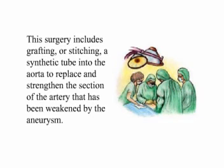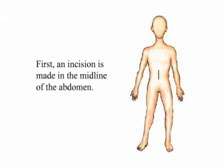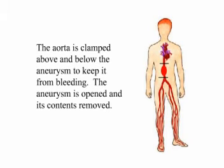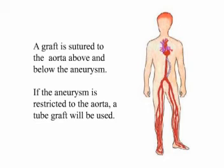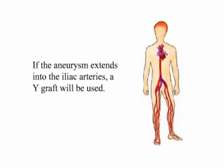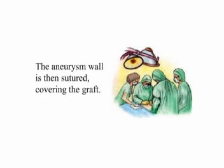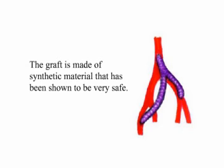Surgical Treatment. This surgery includes grafting, or stitching, a synthetic tube into the aorta to replace and strengthen the section of the artery that has been weakened by the aneurysm. First, an incision is made in the midline of the abdomen. The aorta is clamped above and below the aneurysm to keep it from bleeding. The aneurysm is opened and its contents removed. A graft is sutured to the aorta above and below the aneurysm. If the aneurysm is restricted to the aorta, a tube graft will be used. If the aneurysm extends into the iliac arteries, a Y-graft will be used. The aneurysm wall is then sutured, covering the graft. The graft is made of synthetic material that has been shown to be very safe.